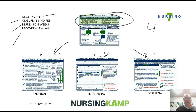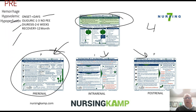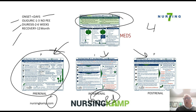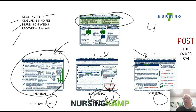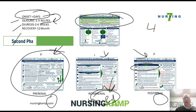Each section is very specific to what the onset would be. For example, in a pre-renal concern, hemorrhage is the problem — the problem is outside the kidney. With intra-renal, medications that go inside the kidney can cause a problem. With post-renal, the problem is after the kidney, such as a kidney stone. If not addressed at onset, all of these will result in an oliguric phase with no urine output.